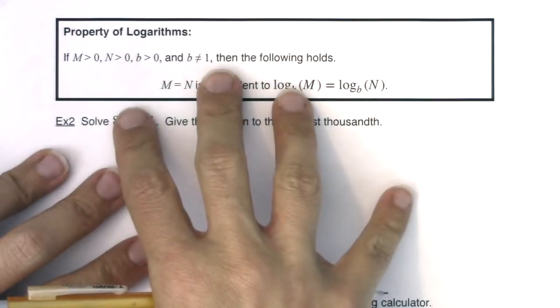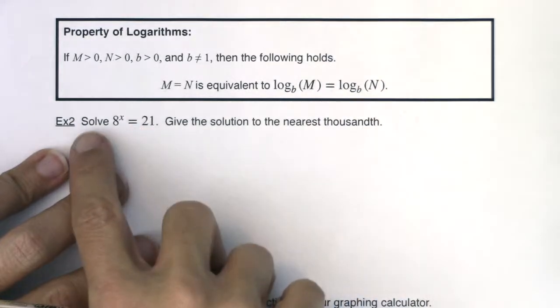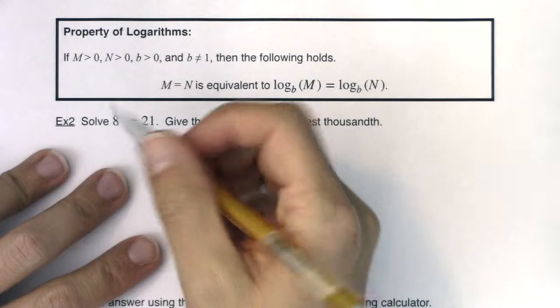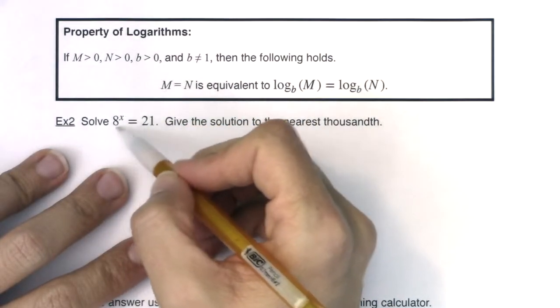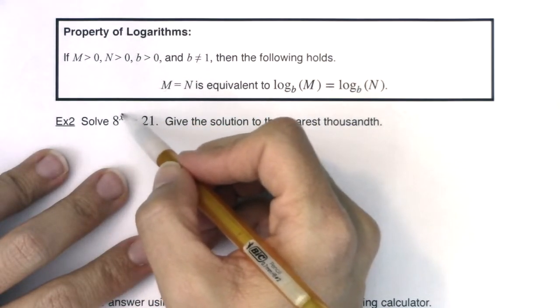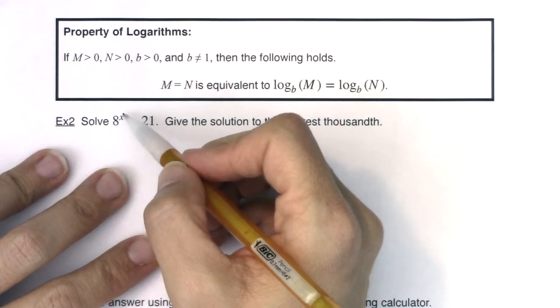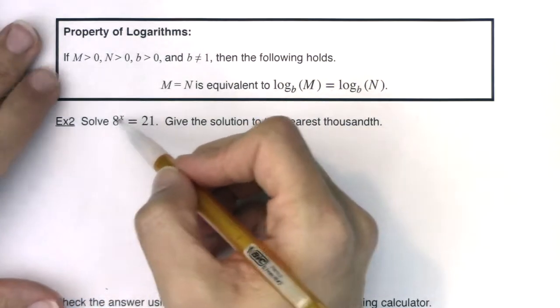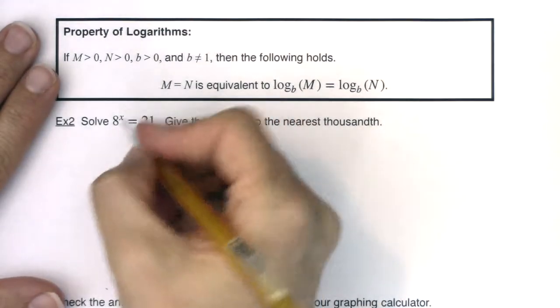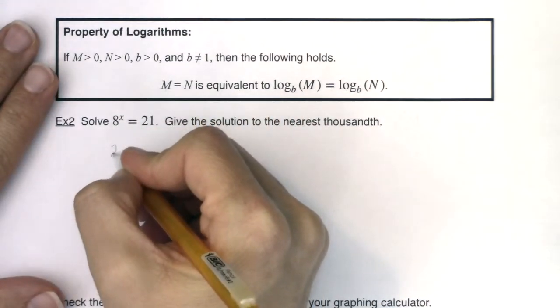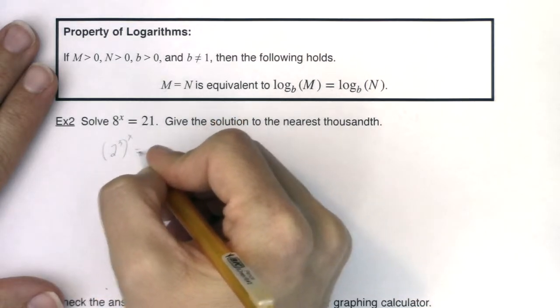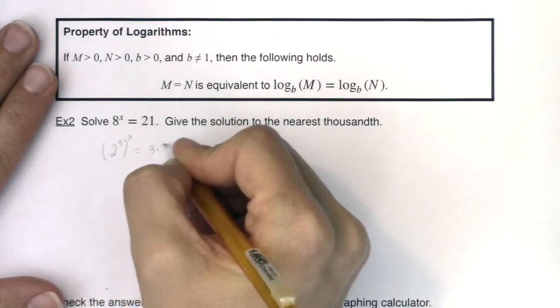So with that, let's take a look at example two. It says solve 8^x = 21 and give the solution to the nearest thousandth. So taking a look at this, I have a power over here, and specifically I have an exponential function because my variable is up in the exponent. And I get a little stuck because if I wanted to break these down into bases, the best you could do is you could say 8 was 2^3, right?